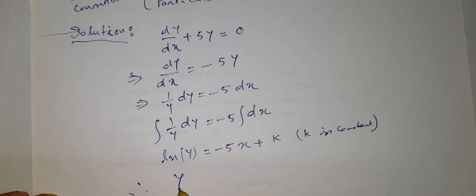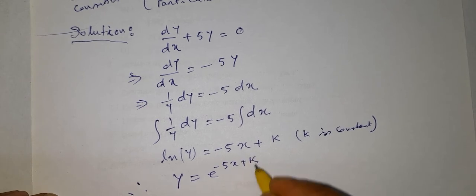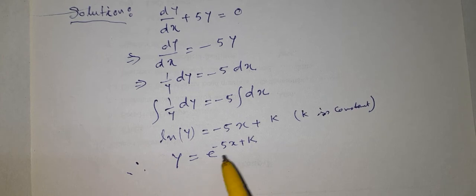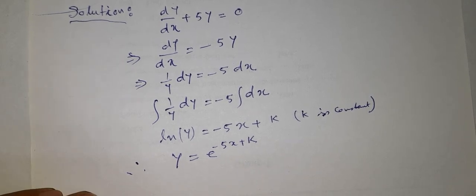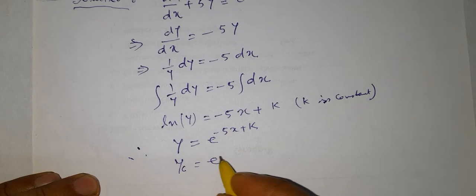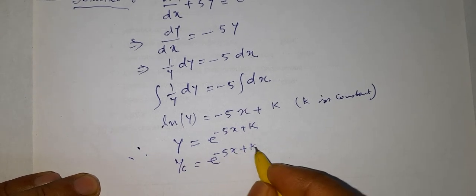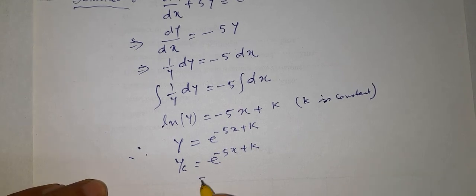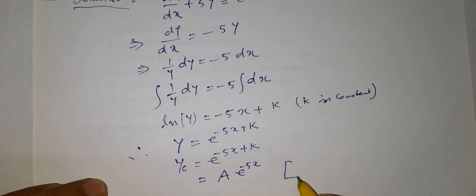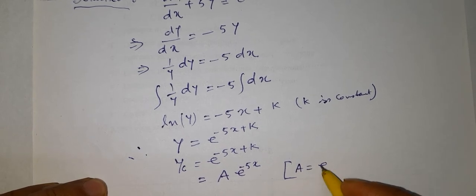Therefore y is equal to e to the power minus 5x plus k. Removing the natural logarithm, the complementary solution yc is equal to e to the power (minus 5x + k), or we may write it as A times e to the power minus 5x, where A is equal to e to the power k.